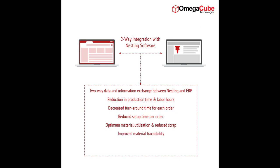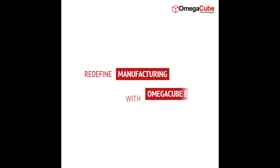Material traceability and inventory management is improved due to auto-update of inventory and BOM data. Due to efficient and quick manufacturing of parts, customers enjoy on-time delivery of their products. Redefine manufacturing with Omega QBRP.